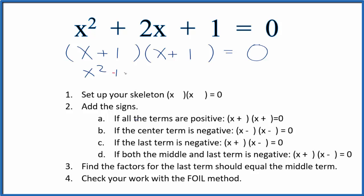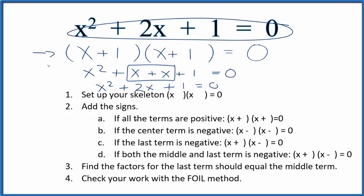Inside 1 times x that's 1x again, and then the last term 1 times 1 that equals 1, all this equals 0. If we combine these two here we end up with x squared plus 2x plus 1 equals 0, which is what we started with, so these are the correct factors.